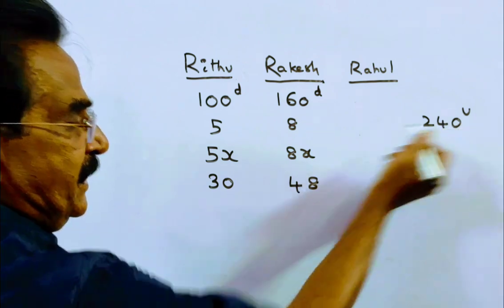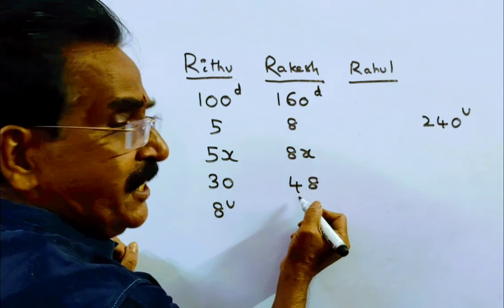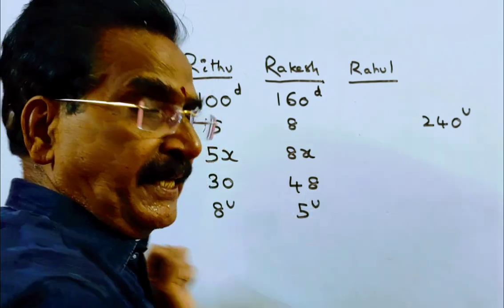Then, Ritu can do 240 divided by 30, so 8 units per day. Whereas, Rakesh can do 240 divided by 48, 5 units per day.